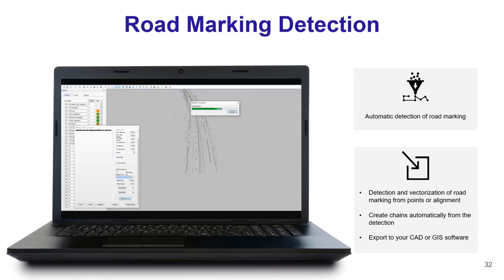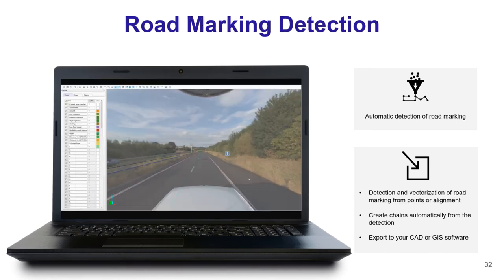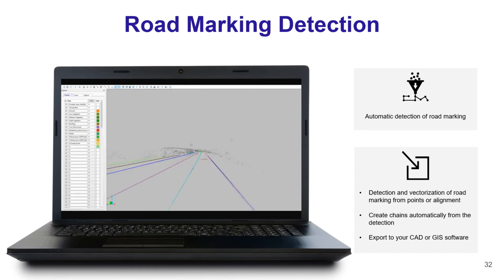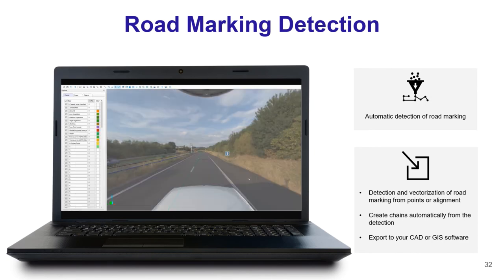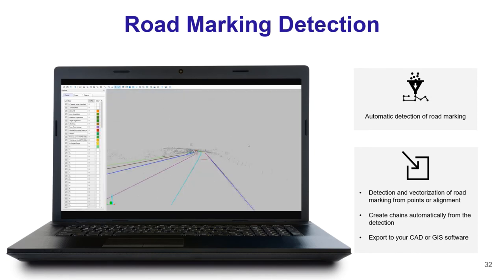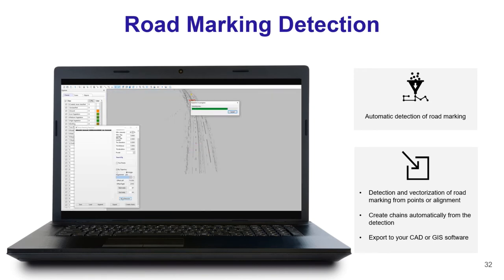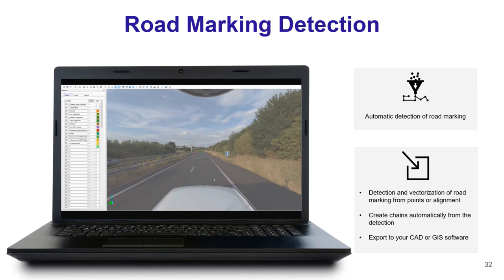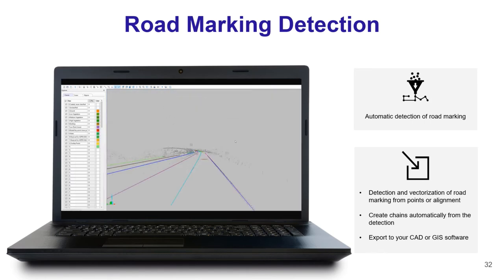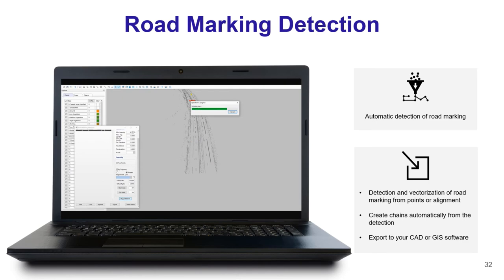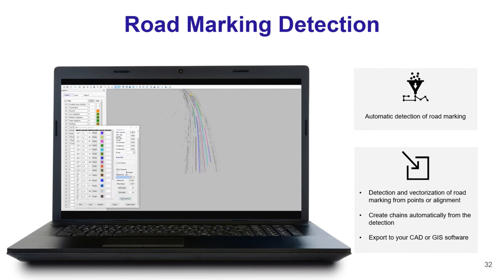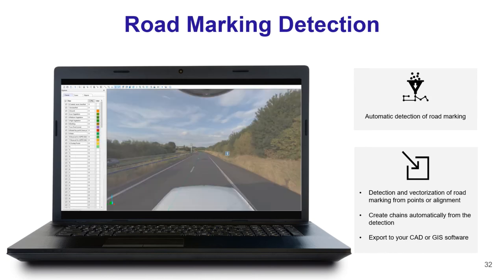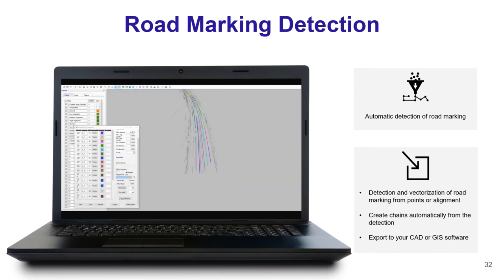The third new feature extraction is road marking detection. Using the intensity value of your scan, Vision LiDAR can automatically detect and vectorize all road markings in one pass or one at a time, creating chains automatically — the same as for curb and crash barrier detection — and exporting directly to your CAD or GIS software.